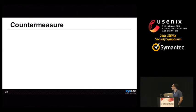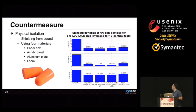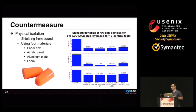There are several countermeasures, but we tested a simple one: physical isolation. Physical isolation is shielding from sound, so we put four different materials between the sound source and the gyroscope. As a result, physical isolation can reduce the effect of sound noise to 20% for X- and Y-axes and to 60% for the Z-axis on average. So a good casing can be a good defense against this kind of attack.